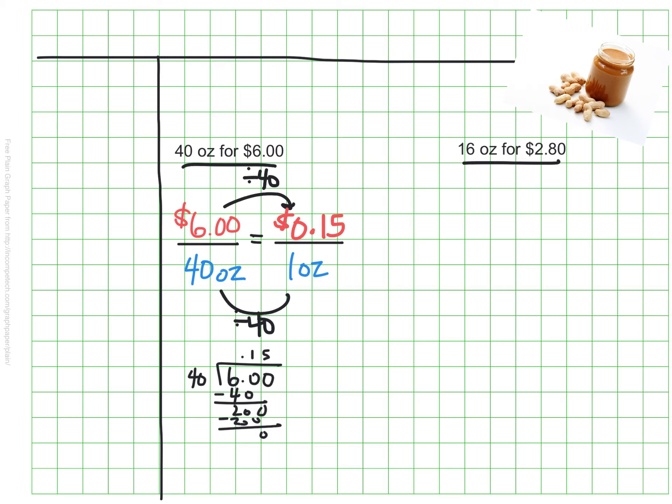And that means that if I buy 40 ounces, each one of those ounces is a rate of 15 cents. It costs 15 cents for each. I'll need to do the same thing for the smaller jar to be able to compare their prices now.